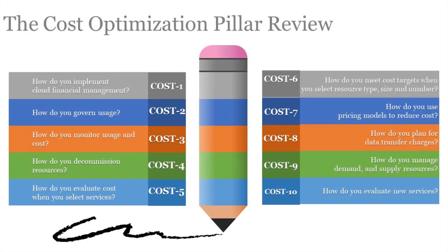Review Based on Cost Optimization Pillar: questions you will go through when reviewing your workload against the Cost Optimization Pillar of the Well-Architected Framework include — COST 1: How do you implement cloud financial management? COST 2: How do you govern usage? COST 3: How do you monitor usage and cost? COST 4: How do you decommission resources? COST 5: How do you evaluate cost when you select services? COST 6: How do you meet cost targets when you select resource type, size, and number? COST 7: How do you use pricing models to reduce cost? COST 8: How do you plan for data transfer charges? COST 9: How do you manage demand and supply resources? COST 10: How do you evaluate new services? The answers to these questions during the review help you identify any gaps in your existing workloads and implement best practices in your AWS environment.